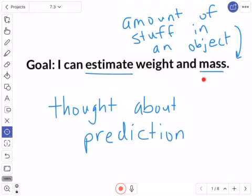And then we're going to be talking about weight and mass. So weight is like how much something weighs. But then we're also going to be talking about this word mass, amount of stuff in an object.